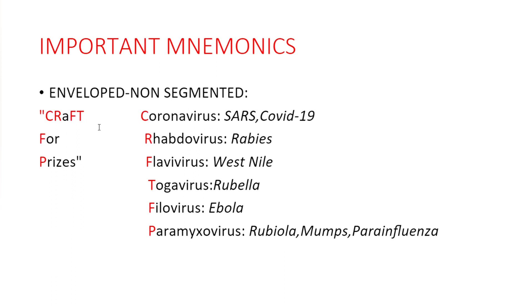For enveloped non-segmented viruses, remember the mnemonic CRAFT for prizes: Coronavirus, Rhabdovirus, Arenavirus, Flavivirus, Togavirus, Filovirus, and Paramyxovirus. Examples include COVID-19 for coronavirus, rabies for rhabdovirus, West Nile virus for flavivirus, rubella for togavirus, Ebola for filovirus, and measles, mumps, and parainfluenza for paramyxovirus.